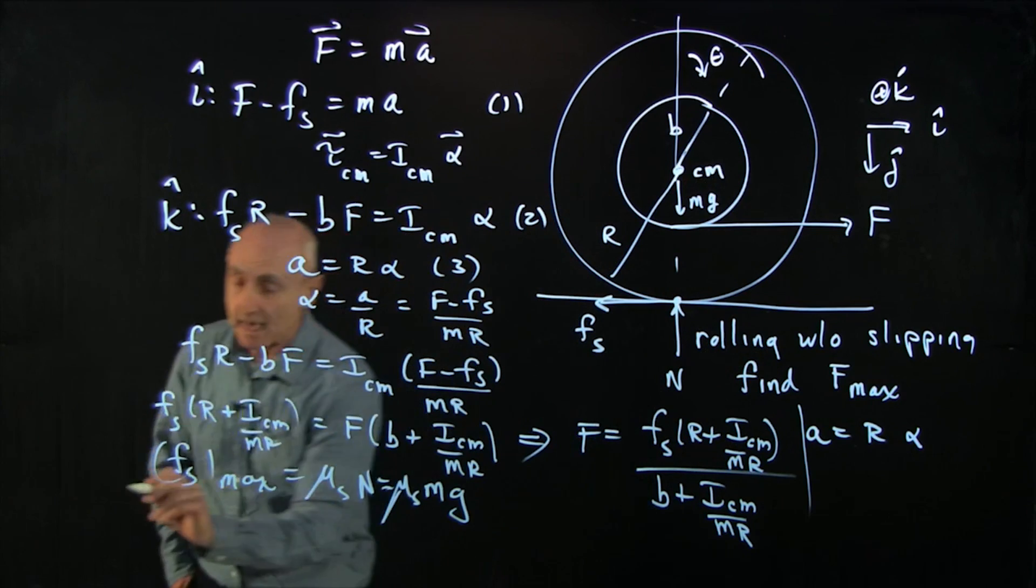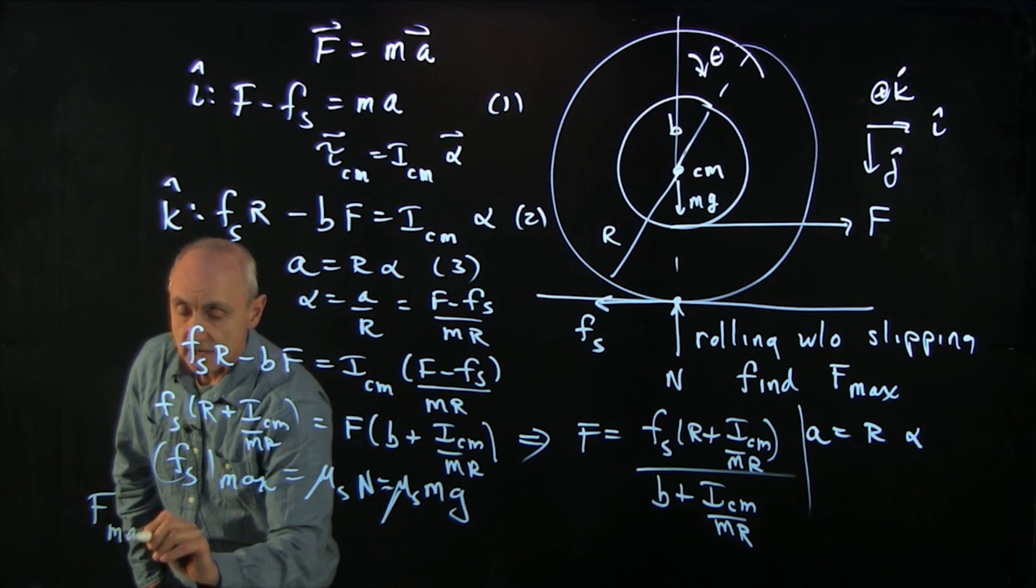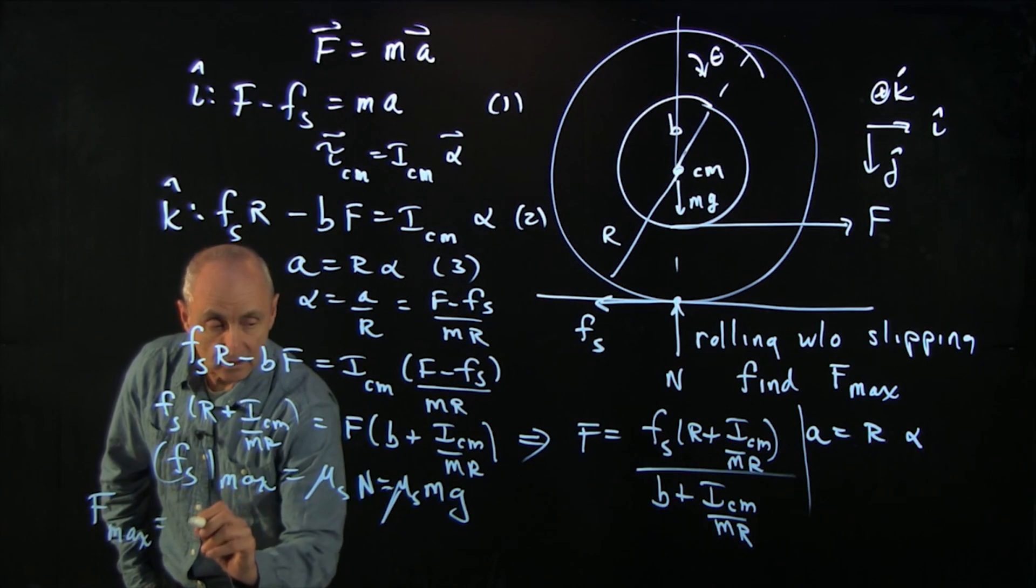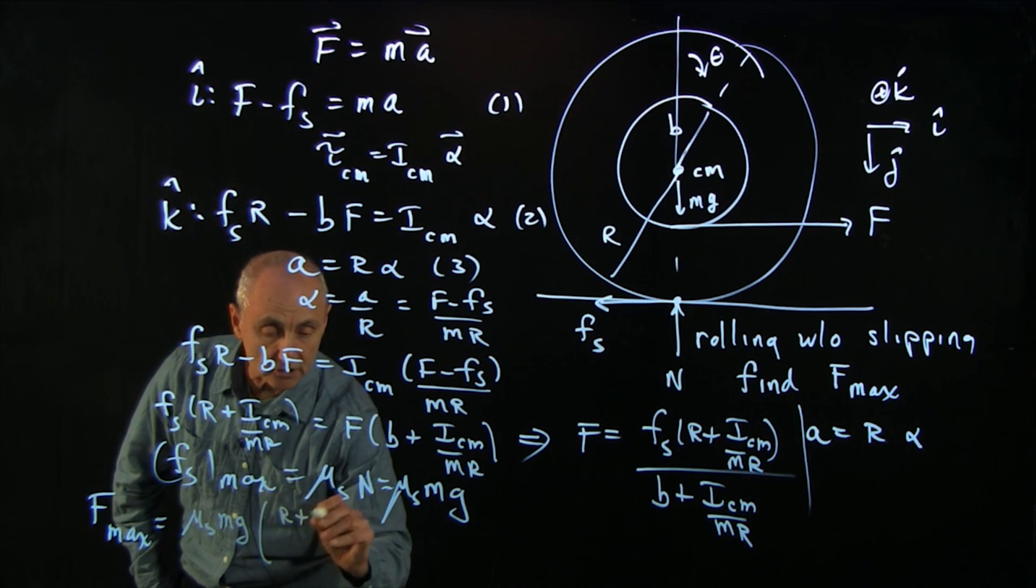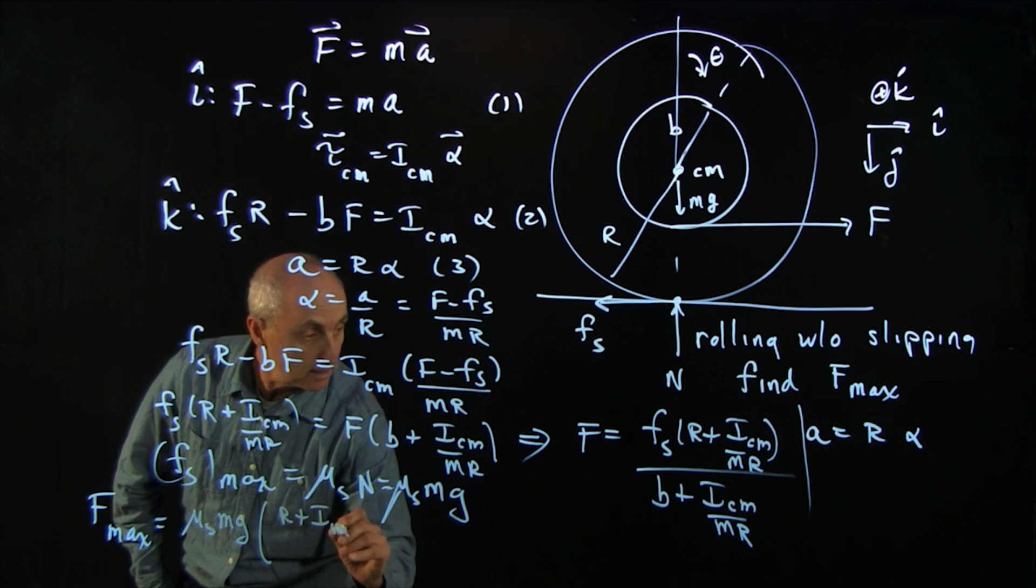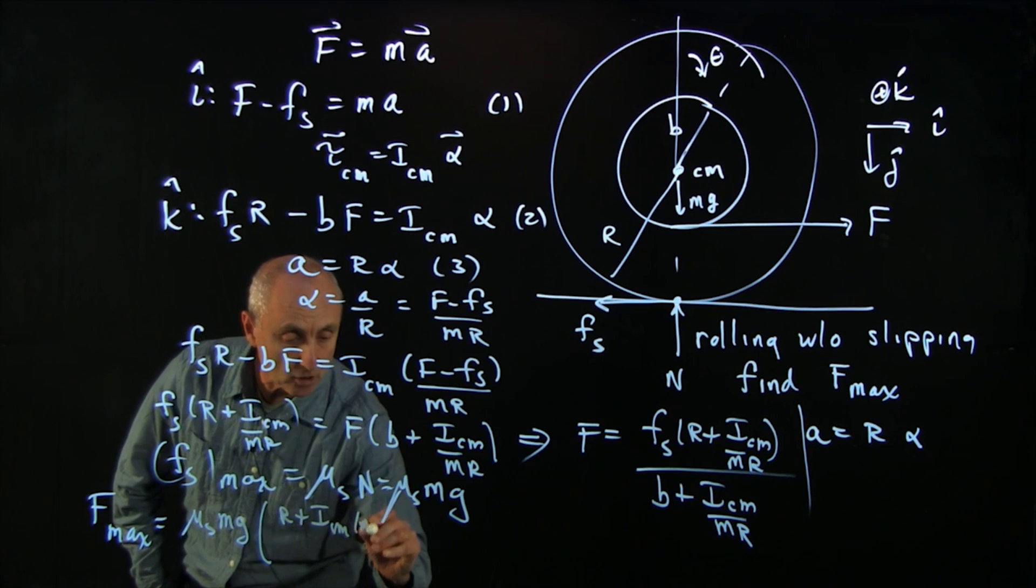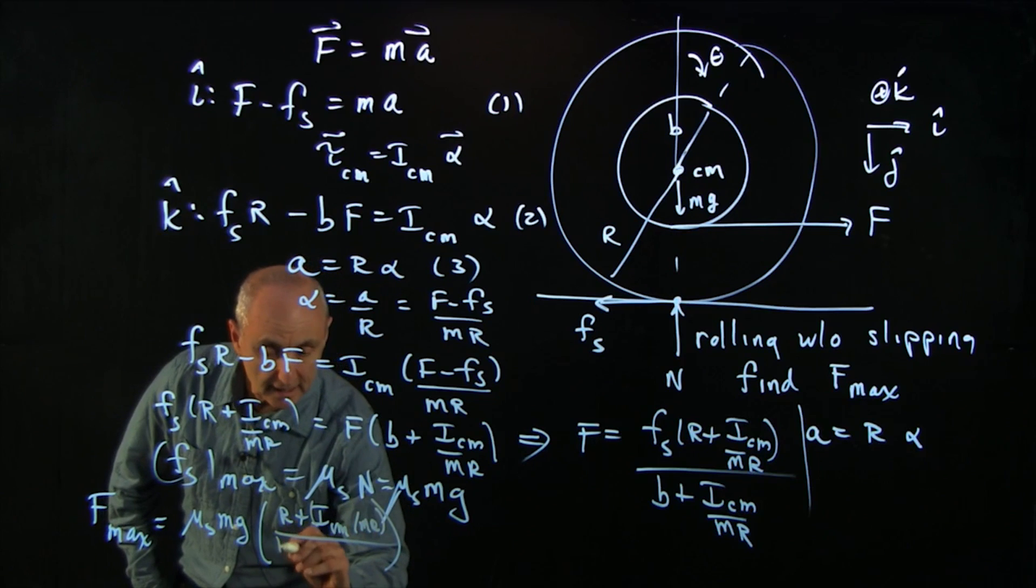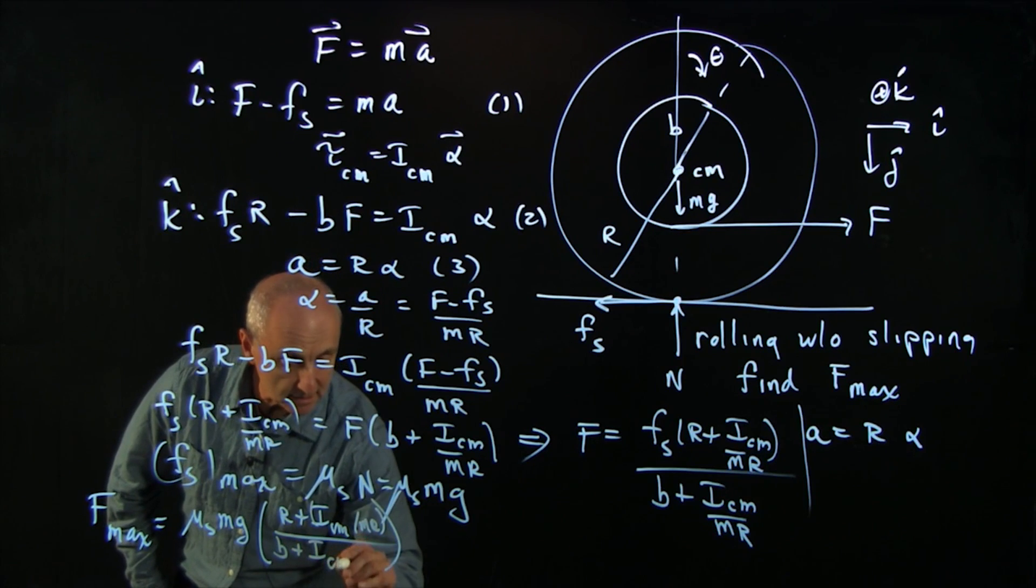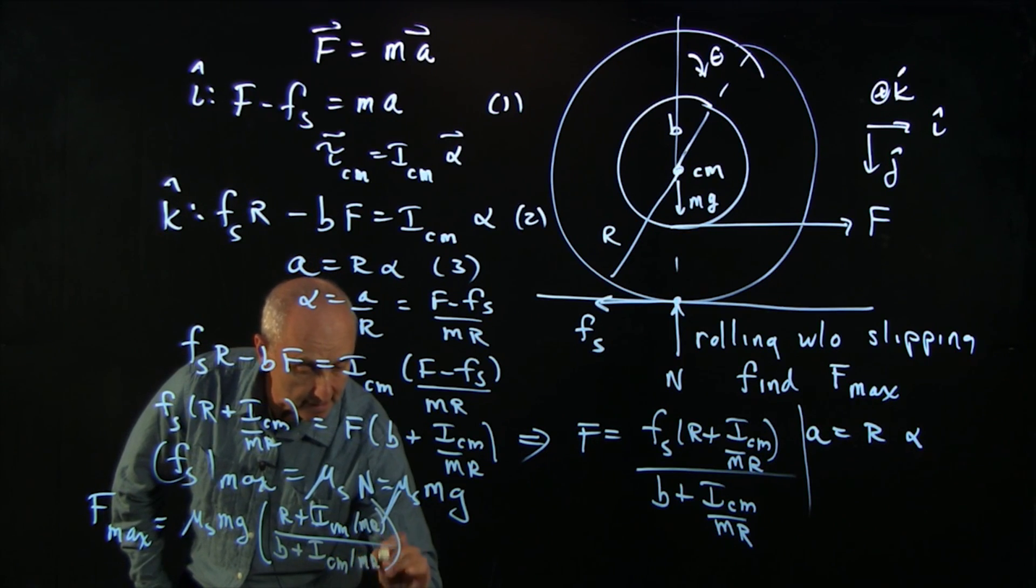And so now I get f max. Now, this is, again, a little complicated. Mu s mg times r plus I cm divided by m r divided by b plus I cm divided by m r.